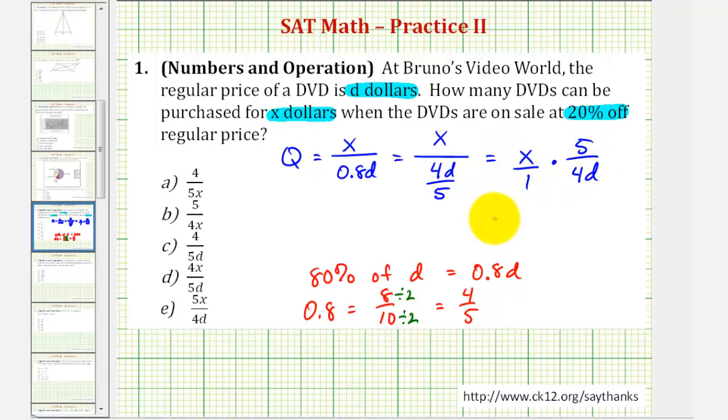Nothing simplifies, so we multiply across the top and bottom. X times five is five X, and one times four D is four D. So the quantity we can purchase from the given information would be five X divided by four D.